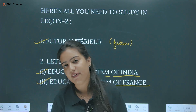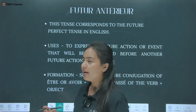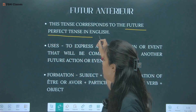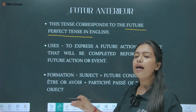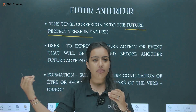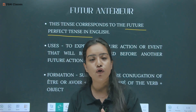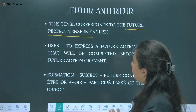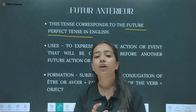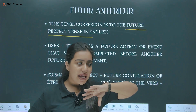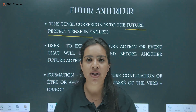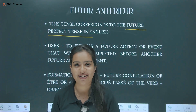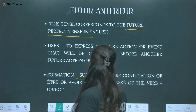Let's start — Future Antérieur. This tense corresponds to the future perfect tense in English — 'will have done,' 'will have eaten.' It is used to express a future action that will be completed before another future action. So there are two future actions, and one gets completed before the other — that is Future Antérieur.